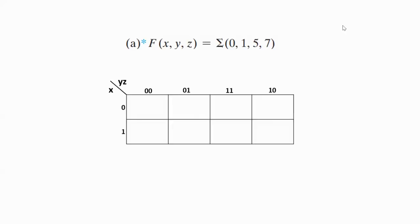Let us start with the first problem. The given Boolean function is f(x,y,z) = Σ(0,1,5,7). Here x, y, z are input variables, f is the output variable, and sigma is the operator which specifies summation. Sigma(0,1,5,7) means these numbers are the minterm numbers. This is a three-variable K-map. The leftmost variable x should be placed on the left side. For x, since there is only one variable, we need 2¹ = 2 combinations of binary values: 0 and 1.